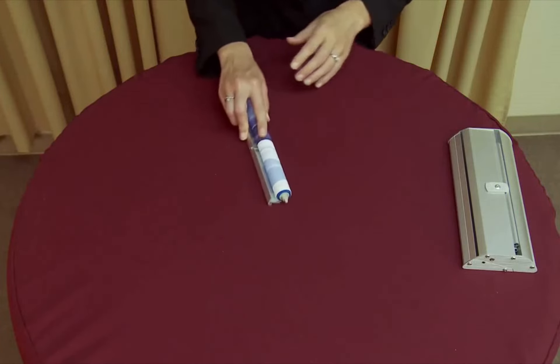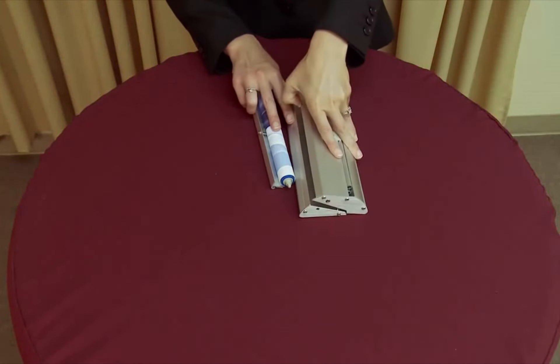Once completely rolled, place the roller back in the base unit with the curved edge of the banner rail facing forward.